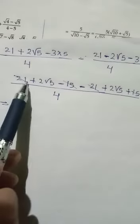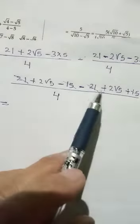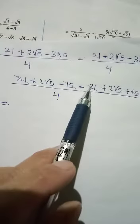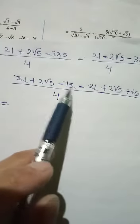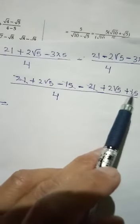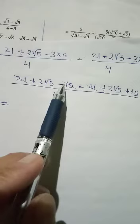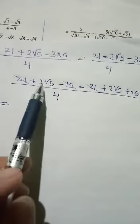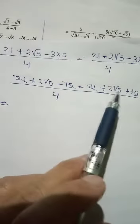Here you have 21. It is plus 21, it is minus 21, minus 21, equals 0. Then you have 15, you have minus 15, you have plus. So 15 minus 15 again equals 0. Then here you have 2 square root 5, 2 square root 5.